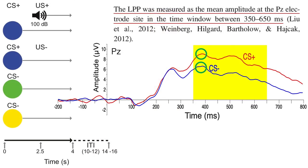It isn't necessarily a problem if a paper uses peaks — it's pretty common. But you should make sure that there's no reason to expect noisier data in one group or condition than in the other.